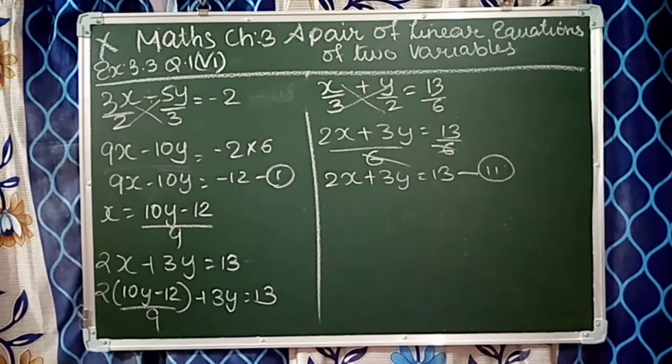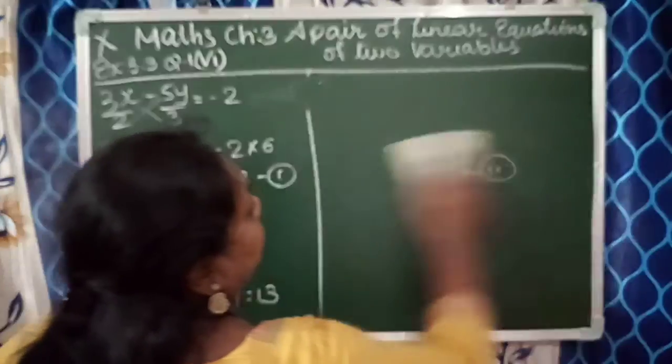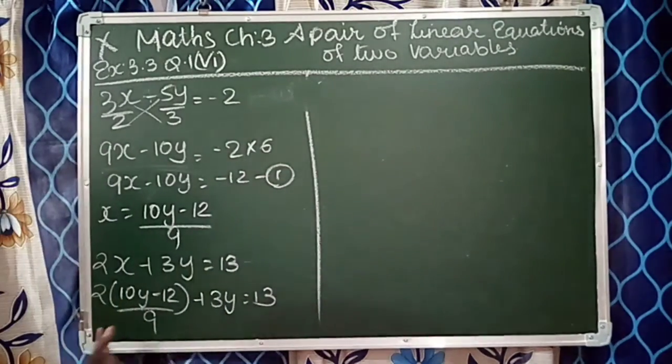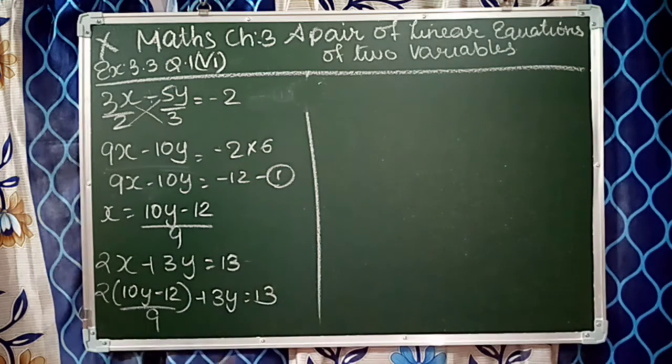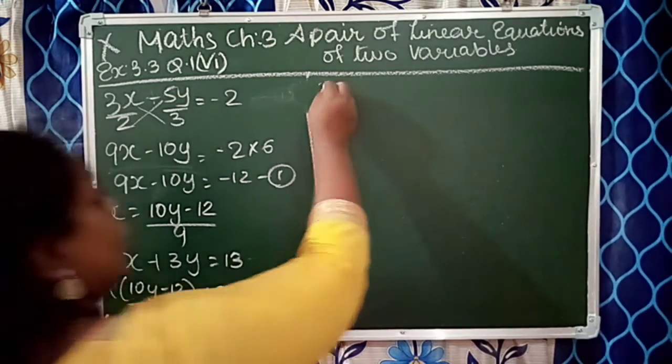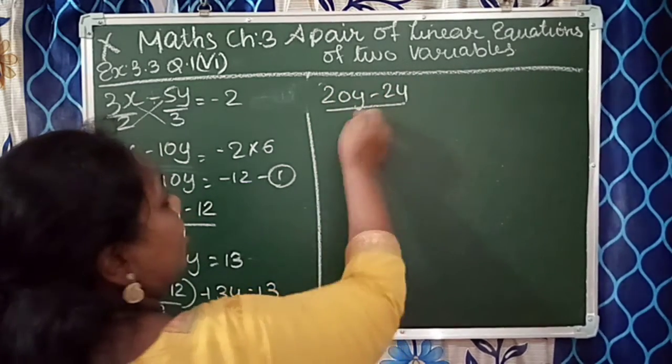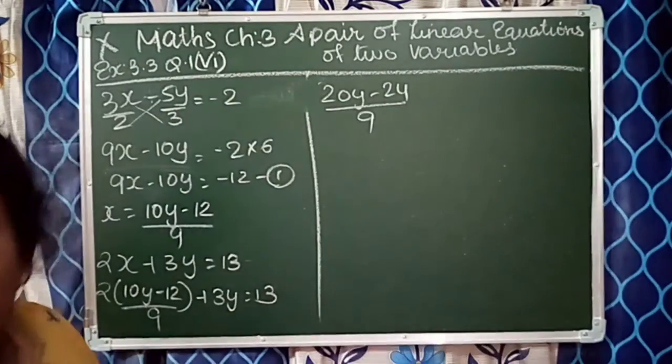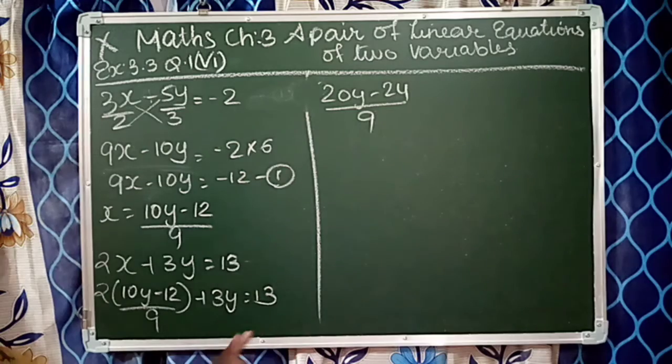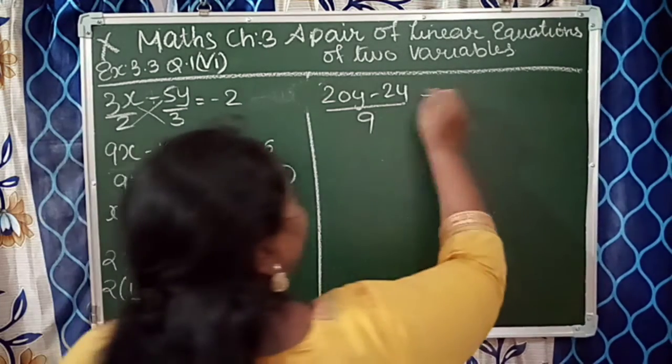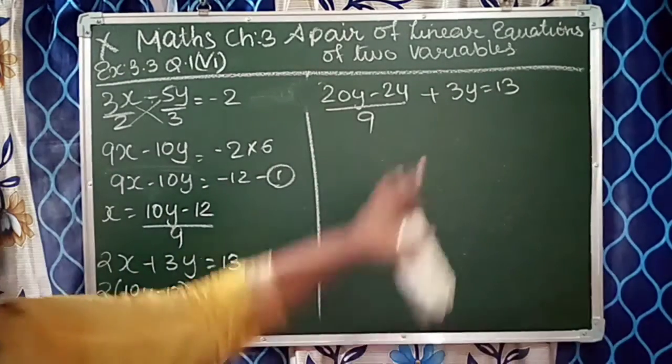The value of x is 2 times (10y minus 12) upon 9, plus 3y is equal to 13. I'll rub this out because there's no space. You can take a screenshot. Here, 9 and 2 won't get cancelled, so 2 times gives us 20y minus 24 upon 9, plus 3y is equal to 13.